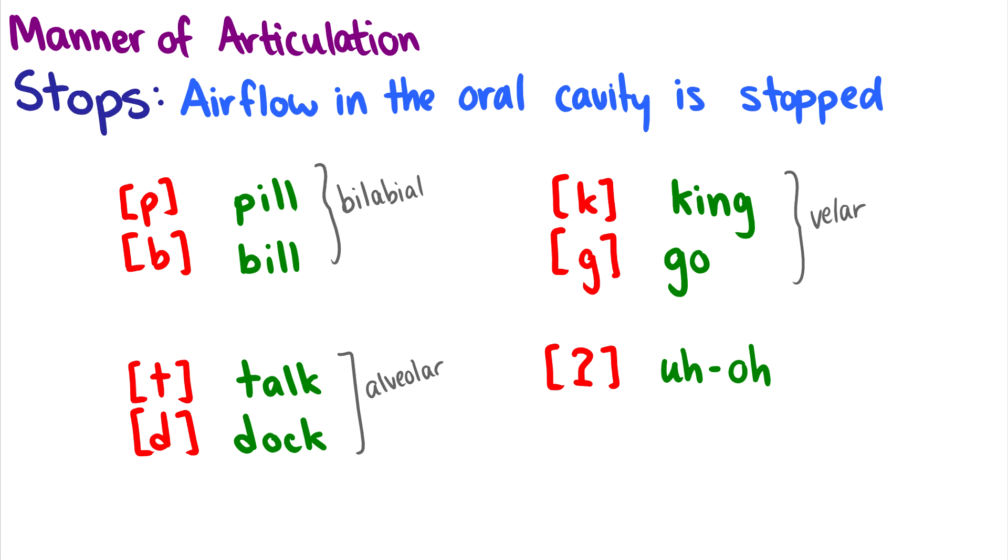And the last one is called a glottal stop, and this one is very hard to hear, but in a word like uh-oh, it's in between the uh and the oh, it kind of sounds like nothing. Another word in your dialect, this isn't true for all speakers of English, but in a word like kitten, you might have a glottal stop there. Some people say kitten, some people say kitten, and other people say kitten with the glottal stop.